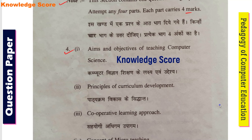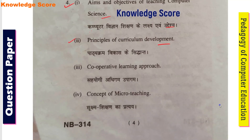The topics in Section B are: first, aims and objectives of teaching computer science; second, principles of curriculum development; third, cooperative learning approach; fourth, concept of micro-teaching.